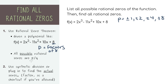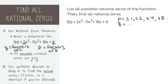That was p, and we're defining q as all of the factors of the leading coefficient, which is the number in front of the variable with the biggest degree. So in our case it's 2. When we list all of the factors of 2, we're just going to get positive and negative 1 and positive and negative 2.